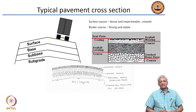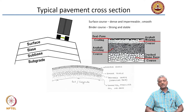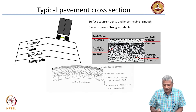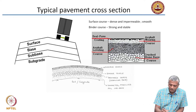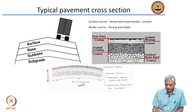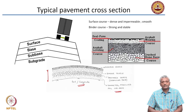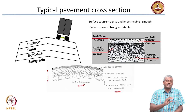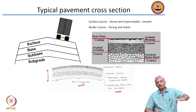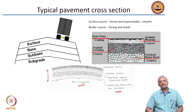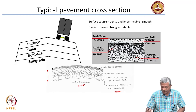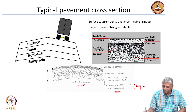A flexible pavement is a system of layers acting together, with load intensity reducing from the top layer to the subgrade. The bottom-most layer is the soil or subgrade, on top of which there is sometimes a sub-base — a compacted and stabilized soil. If the bottom subgrade itself is properly compacted before placement, a separate compacted sub-base layer may not be needed, though sometimes dry lean concrete is also used.